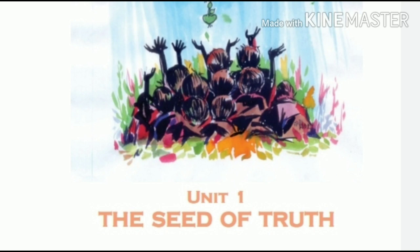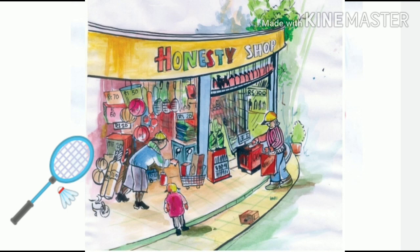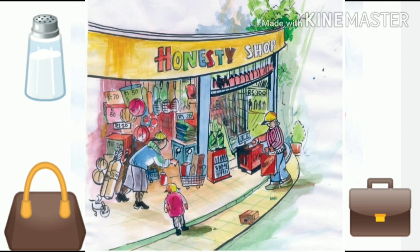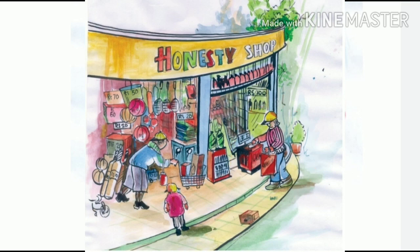Please take page number 27, Activity 8. Can you see a picture there? Look at the picture — what is in it? What are the things that we see in this shop? There are lots of things like shuttle beds, balls, water bottles, bags, covers — lots of things are there. Can we see a shopkeeper here? Yes, there is a shopkeeper. He is arranging something, taking some bag or arranging something.